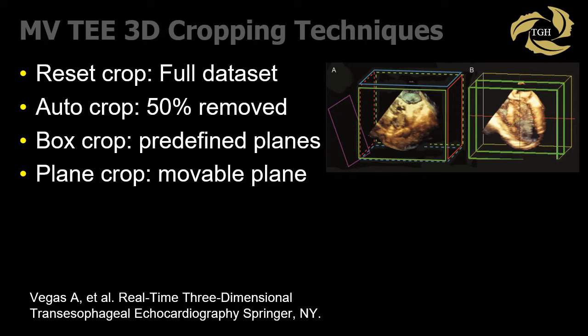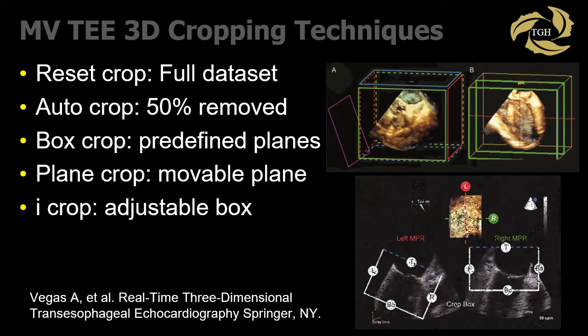Generally speaking, the mitral valve often fills the display with both 2D and 3D imaging. Cropping may be useful to eliminate near-field clutter in the left atrium. Cropping of the mitral valve may involve options such as auto-crop reset, which crops the dataset in half; box crop using predefined planes; plane crop, which is an independently mobile plane; and eye crop, which uses a cube to alter the size of the dataset.